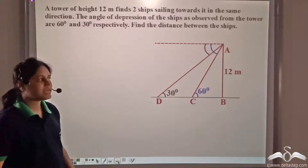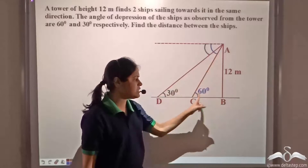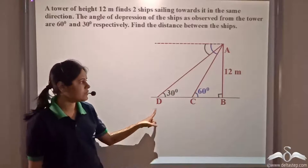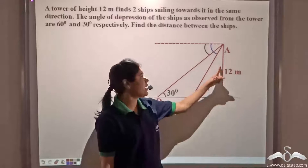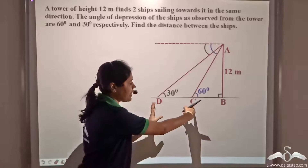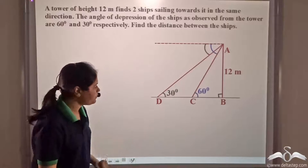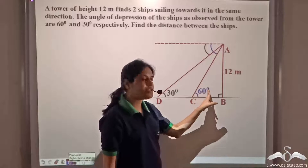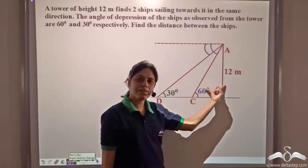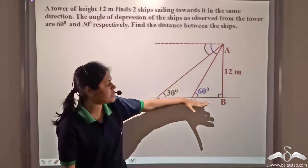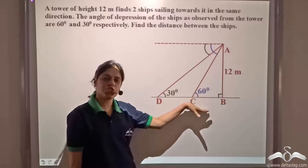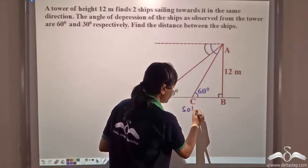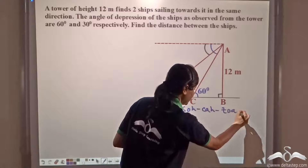We have two triangles, ABC and ABD, each with a right angle at B. AB equals twelve meters is known, and we need to find CD. Since AB is opposite to the sixty-degree and thirty-degree angles and BC and BD are the adjacent sides, we use the trigonometric ratio for opposite over adjacent, which is tan.